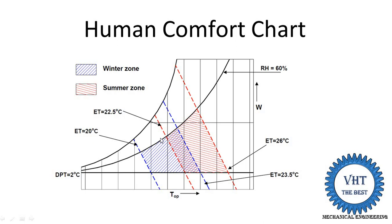Not all persons feel comfortable at one specific effective temperature. Some feel comfortable at 22.5 degrees centigrade and some at 26 degrees centigrade. We cannot say all people feel comfortable at exactly 24 degrees, because it depends on the psychological conditions of the human being.